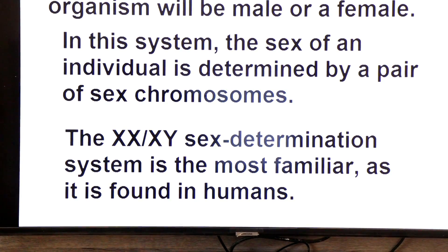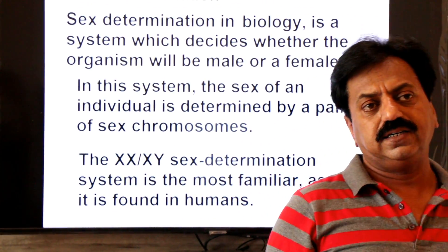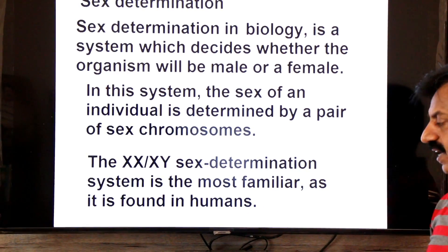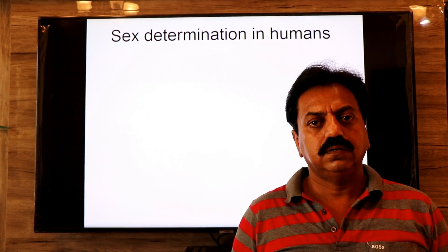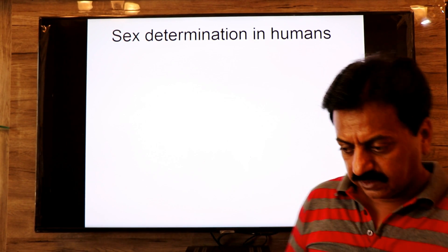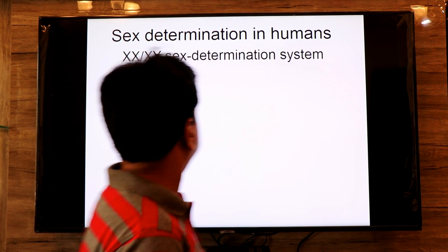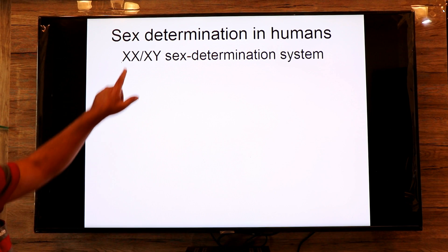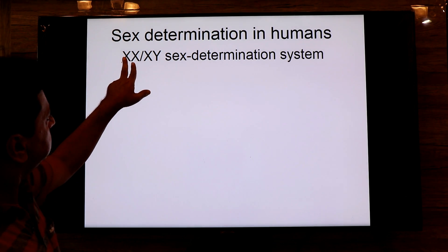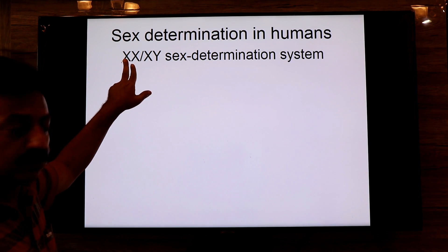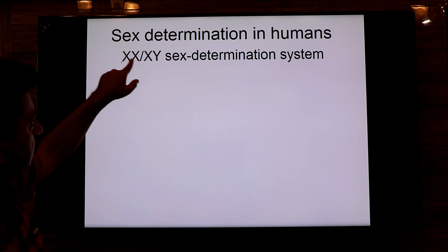Let's discuss in detail this XX/XY sex determination in human beings. In case of human beings, the system is known as the XX/XY sex determination system. If the zygote receives two sex chromosomes and both are X — one X inherited from the father and the other X from the mother — the zygote with two X chromosomes will develop into a female.